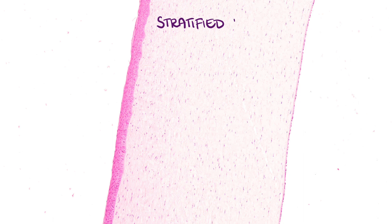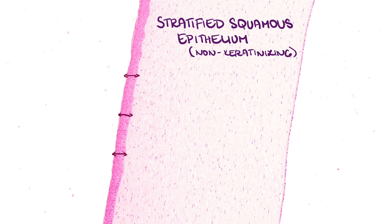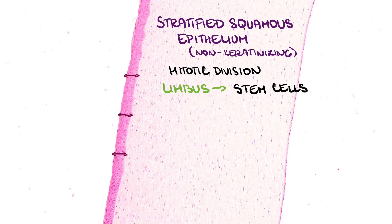The cornea on the specimen stained with hematoxylin-eosin is a thick plate composed of three layers separated by membranes, so a total of five layers. It is half a millimeter thick in the center and one millimeter on the edge. On the outer surface it is covered by stratified squamous epithelium, which is non-keratinizing. This epithelium is capable of renewal by mitotic cell division in the basal layer. In the limbus area we find stem cells for this epithelium. Cells are replaced every seven days.